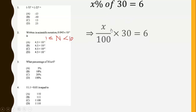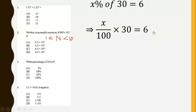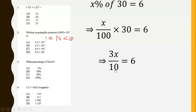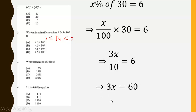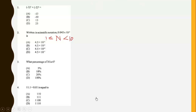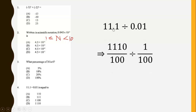We can rewrite this as x over 100 times 30 equals 6. We simplify this to obtain 3x over 10 equals 6, then simplify further to obtain 3x equals 60, then we find x to be 20.